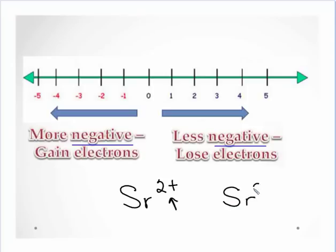So if I'm looking at something like Sr2+, I would ask myself, is this charge more negative than strontium? Strontium has a charge of zero. We don't usually show it, but I wanted to make a point there. So is it more negative or less negative?